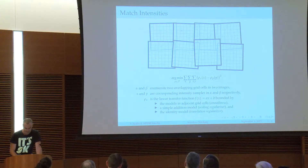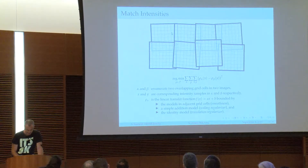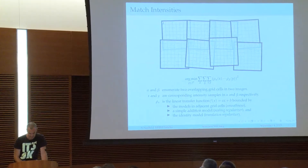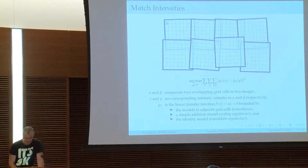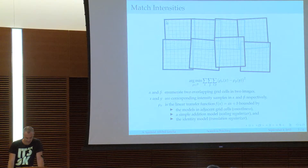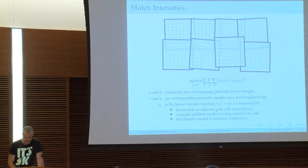We want to make these images look equal in the overlapping parts. We do this by splitting every individual image into a grid of linear intensity coefficients. We want to estimate an intensity transfer function for each of these grid cells such that over the image everything is kind of smooth, and in the overlapping parts they look similar. This results in a cost objective that we see down here.